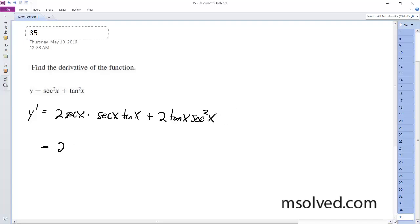we get 2 secant squared x times tangent x plus 2 secant squared x tangent, let's see here, tangent x, looking at my notes,